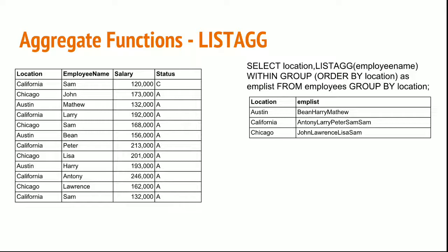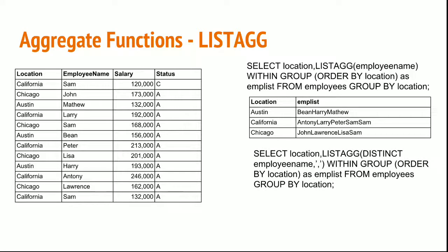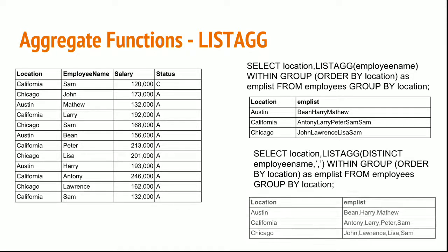You can see that California has two Sams at the end and all names are concatenated together, making it difficult to separate them. If I want to consider only one Sam from California and separate them by a comma, I need to add the DISTINCT keyword to LISTAGG and a comma as a delimiter. This way the result will eliminate the second Sam and separate each name by a comma.